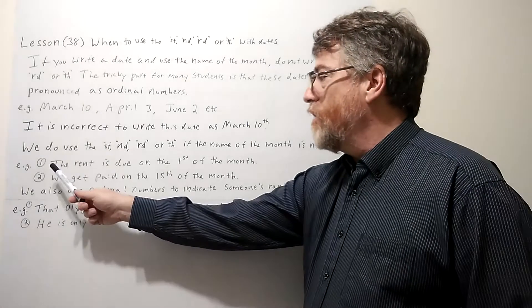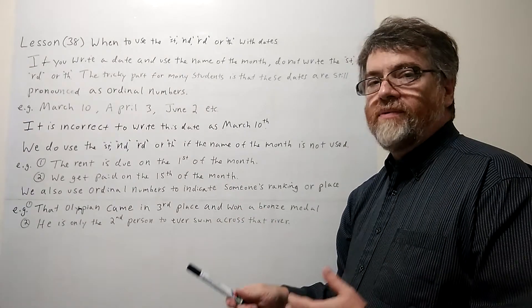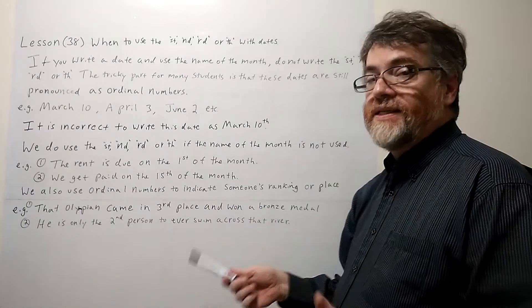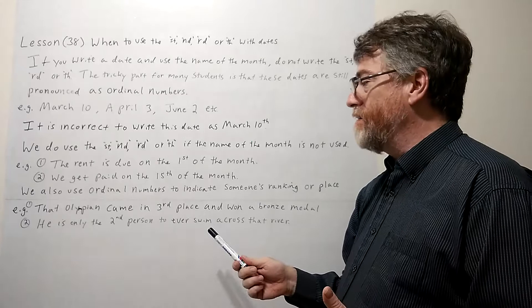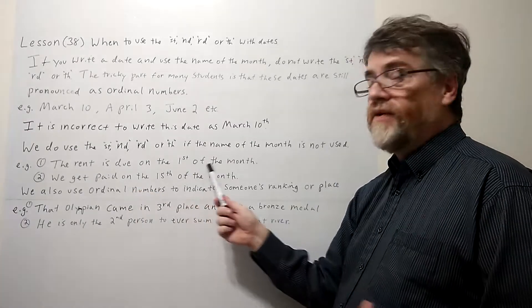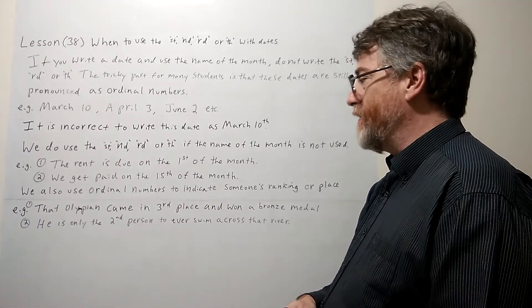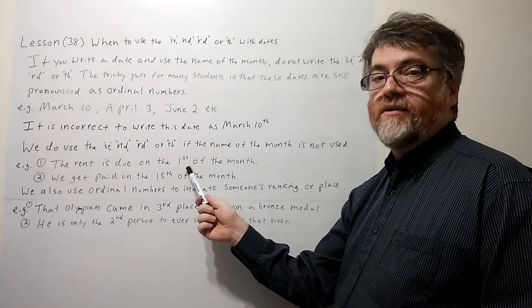All right, example number one. The rent is due on the first of the month. Yeah, you actually need it here. It's necessary. If you don't write it here it gets confusing. It's the rent is due on the one of the month. The ST lets you know that it's a date. So that's why it is absolutely necessary here.